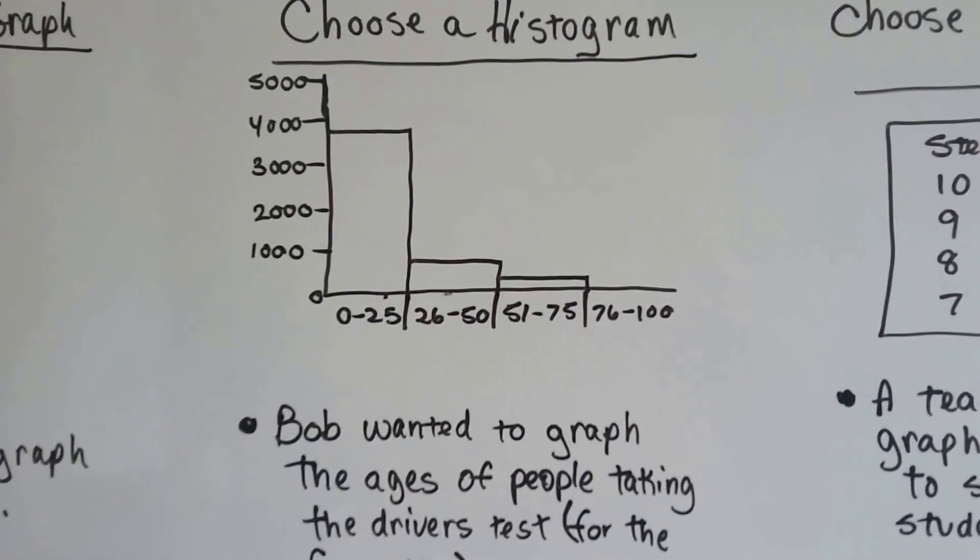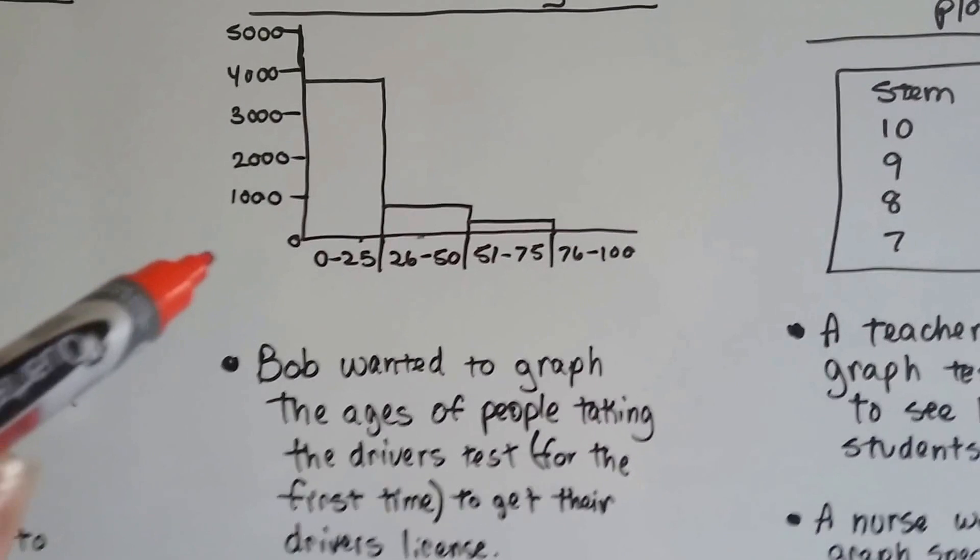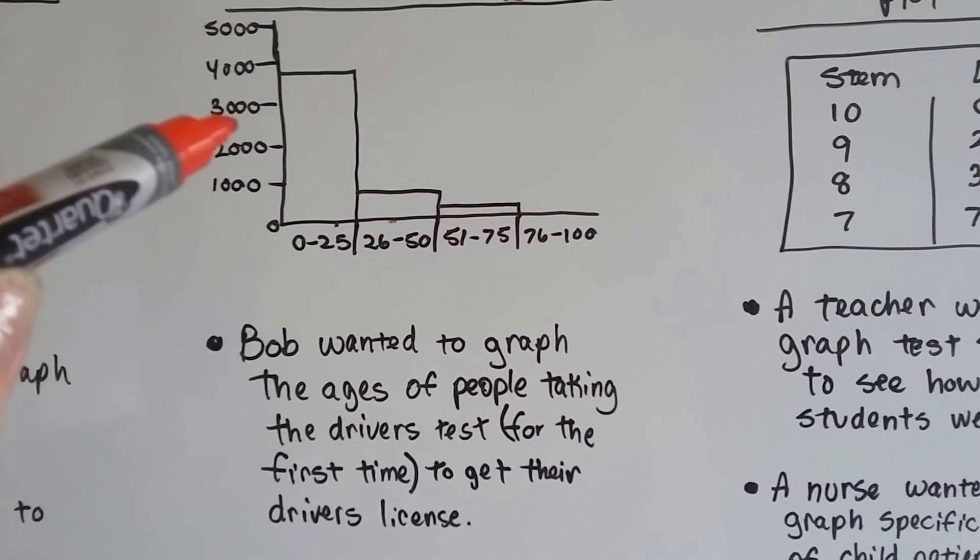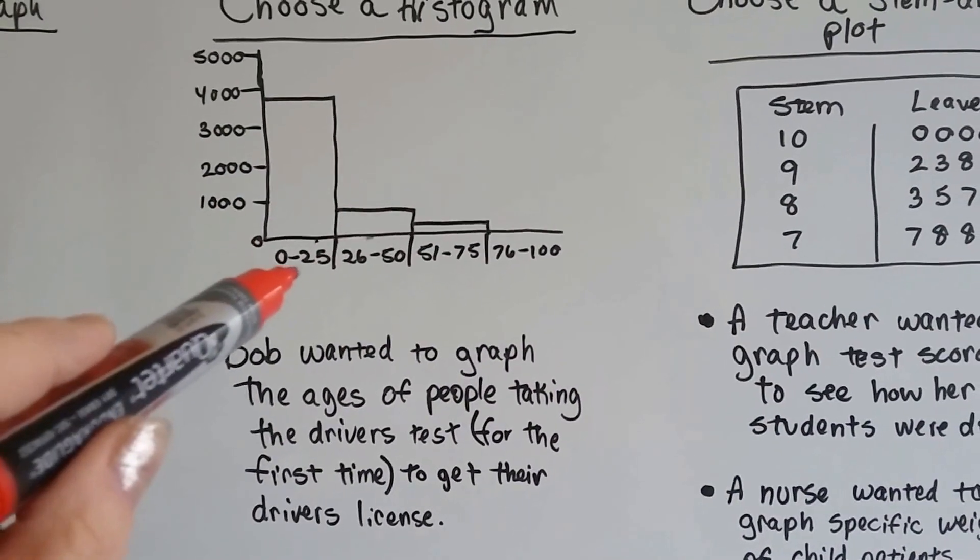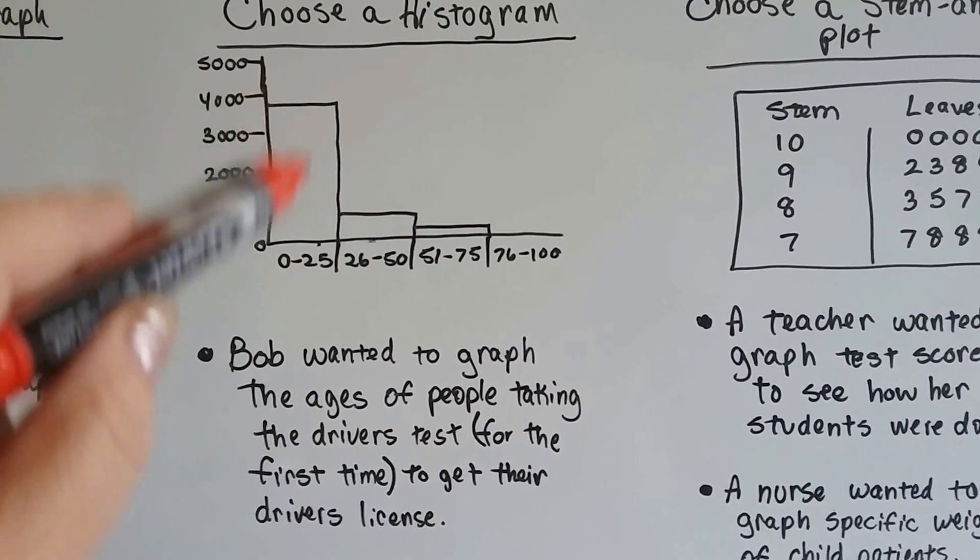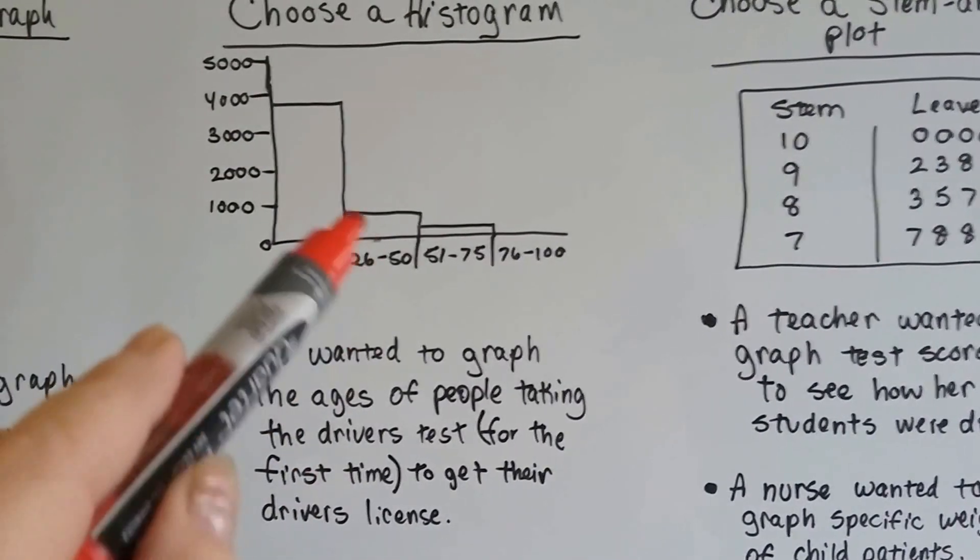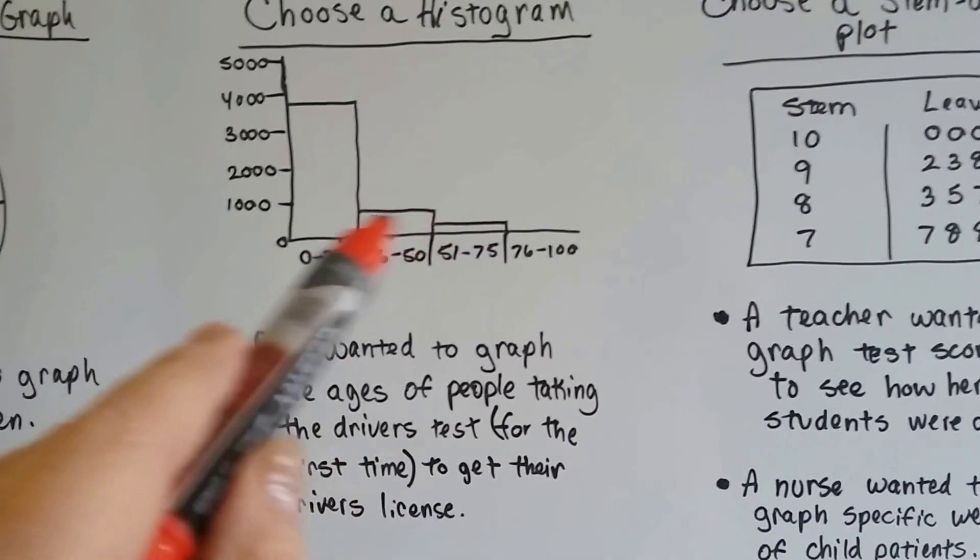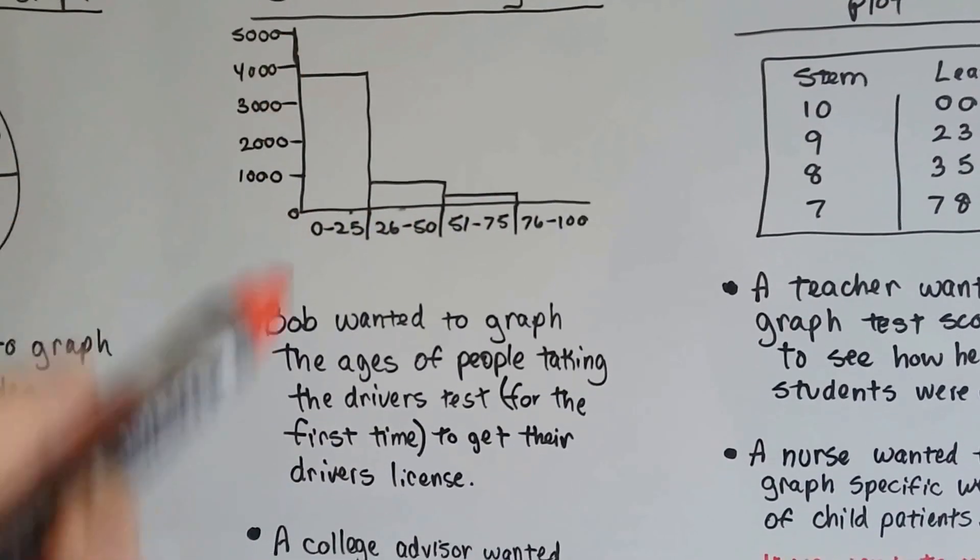You could choose a histogram. Bob wanted to graph the ages of people taking the driver's test for the first time to get their driver's license. See? It was mostly young people. Some older people were getting their driver's license for the first time, but very few compared to the young people.